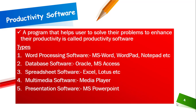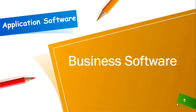Next we have database software like Oracle or MS Access. Next we have spreadsheet softwares in the form of Excel and Lotus. We also have multimedia softwares in the form of Media Player, and presentation softwares in the form of MS PowerPoint. These five are the major types of productivity software.